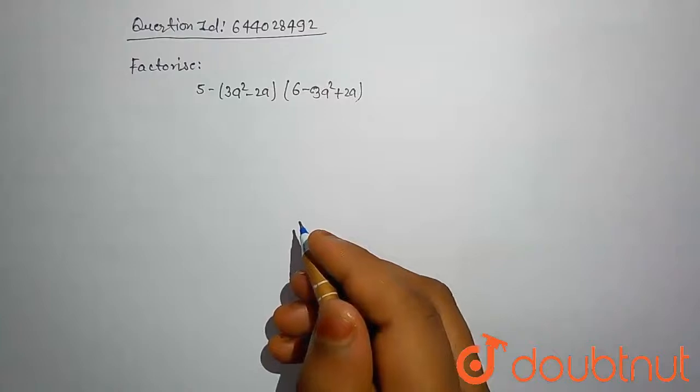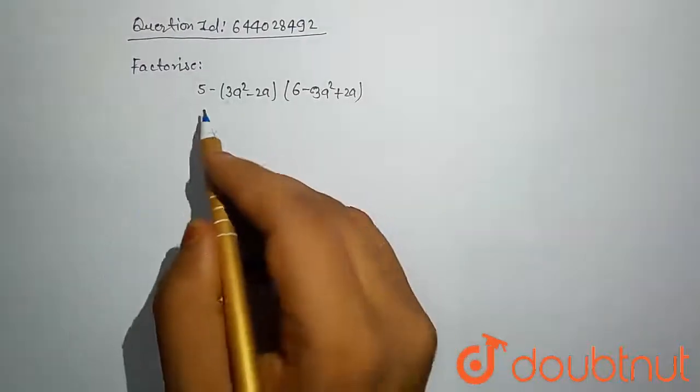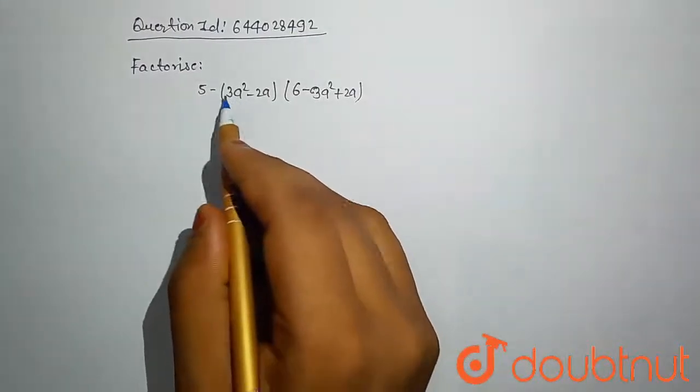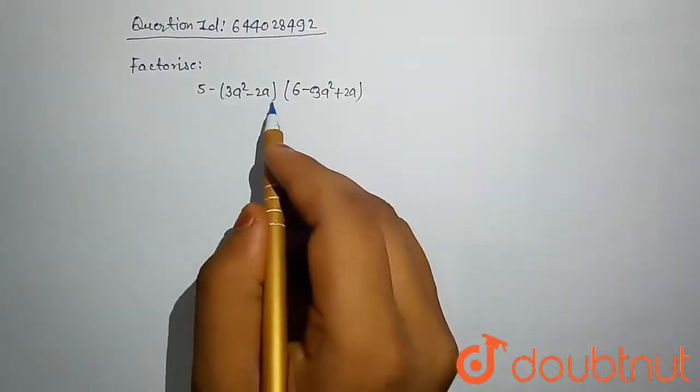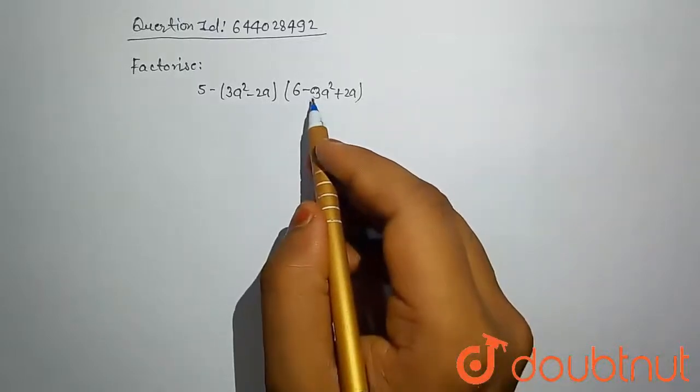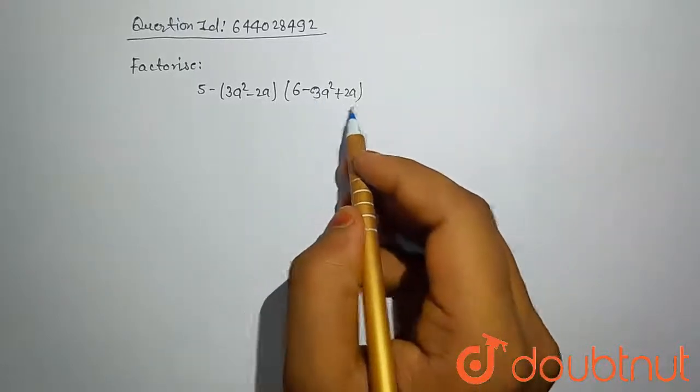Hello friends, today our problem is: factorize x^5 minus (3a^2 - 2a)(6 - 3a^2 + 2a).